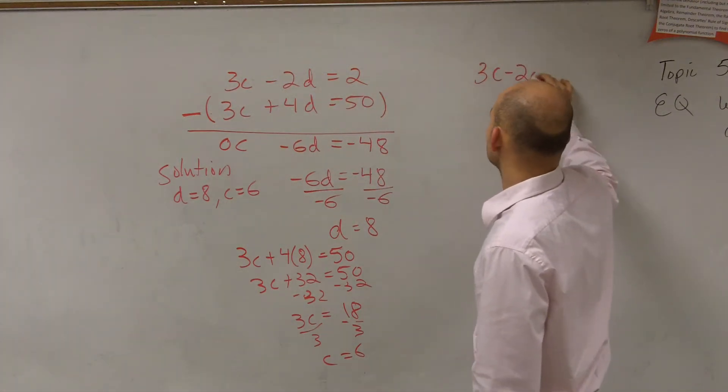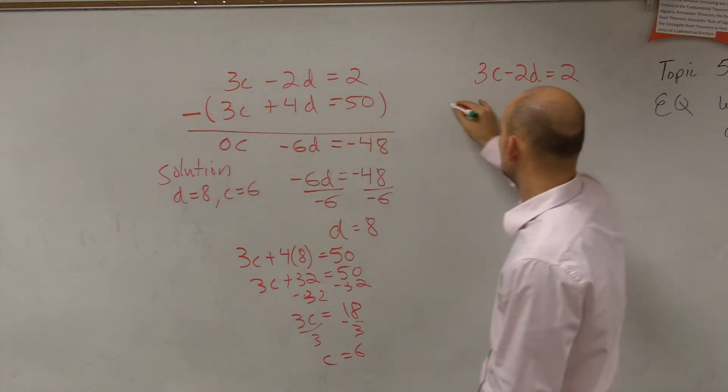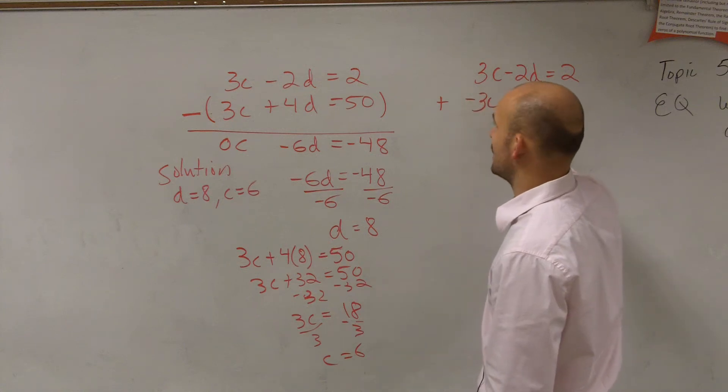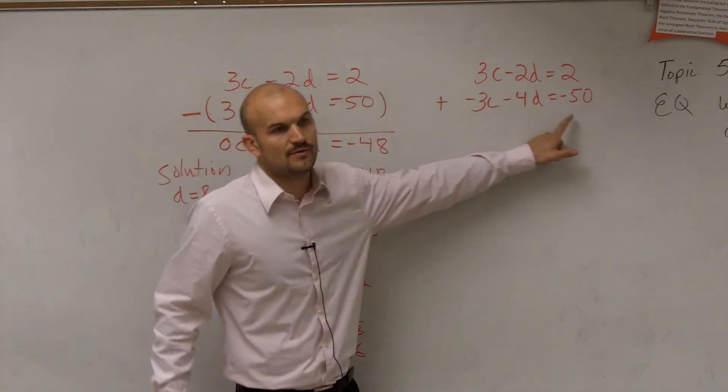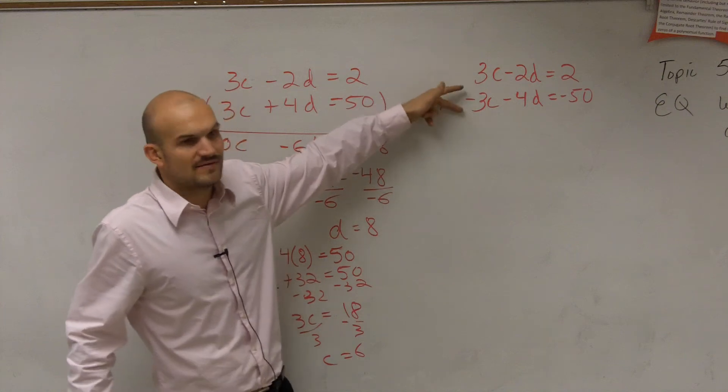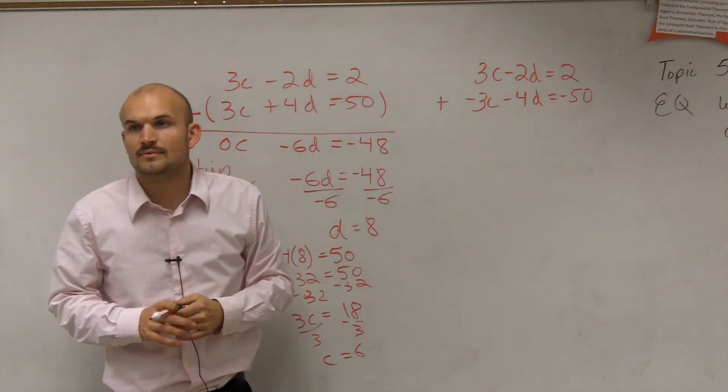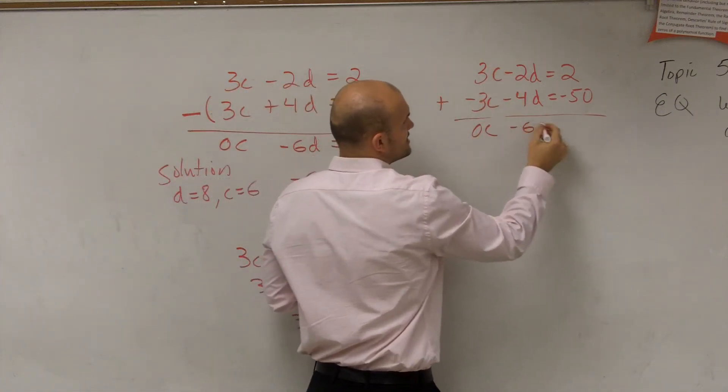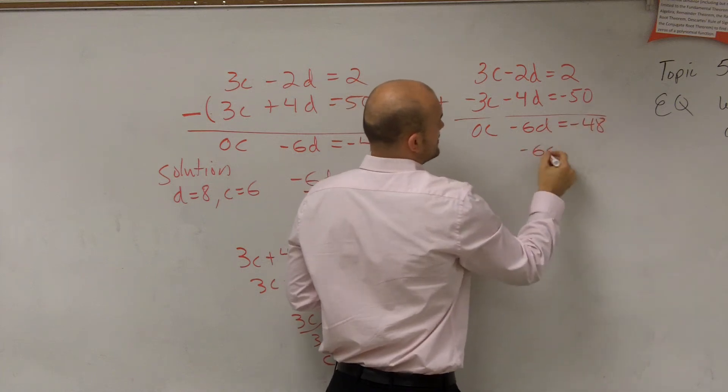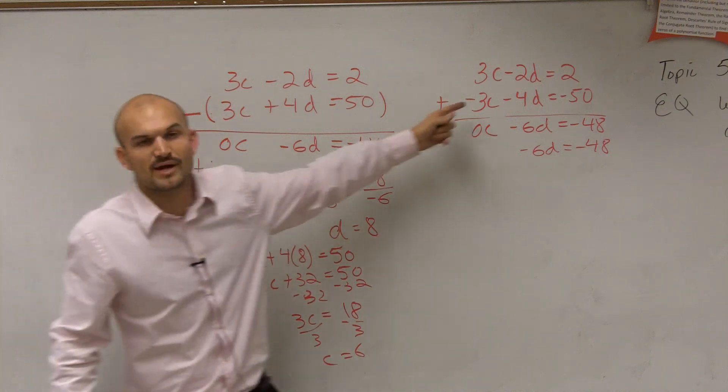Do 3C minus 2D equals 2. And then if I multiplied all this by negative 1, I could add them now because I'd have a negative 3C minus 4D equals negative 50. So if you multiply the bottom equation by negative 1, do you now have a positive and a negative? Yeah. So you can just add them up. And one of them will always be 0. Let's look at them when we add them. We get 0C minus 6D equals negative 48. Negative 6D equals negative 48. It's the exact same of what I had here.